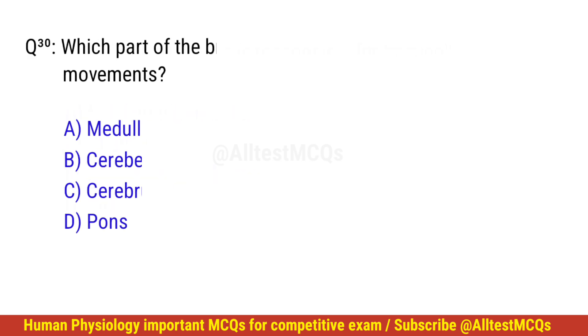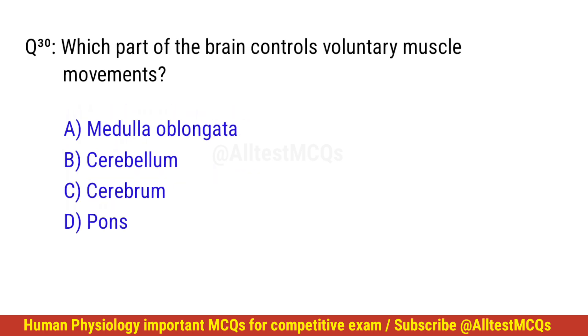Question number 30. Which part of the brain controls voluntary muscle movements? The correct option is C: Cerebrum.